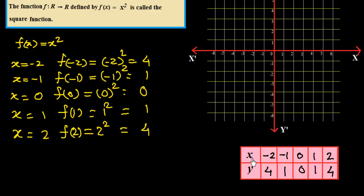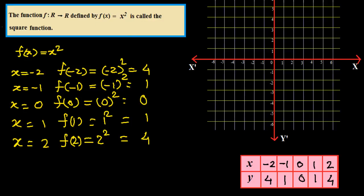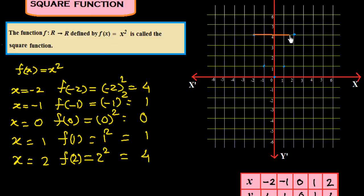Now we plot these coordinates on the graph. For x equal to minus 2, y is 4, so the point is here. If x is minus 1, then y is 1. x is 0, y is 0. x is 1, y is 1. x is 2, y is 4. In this way we construct the graph.